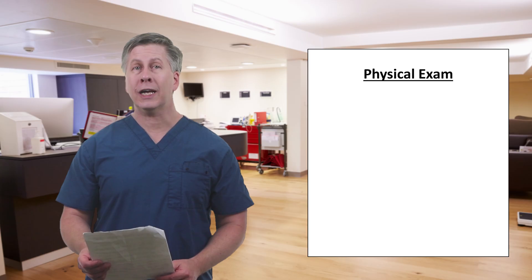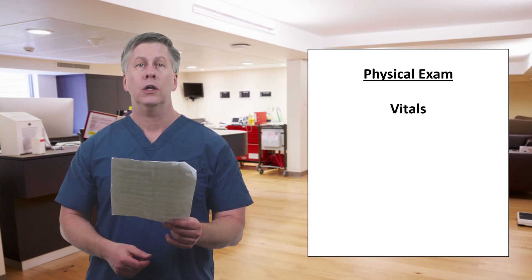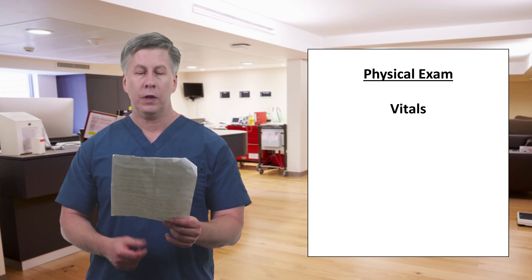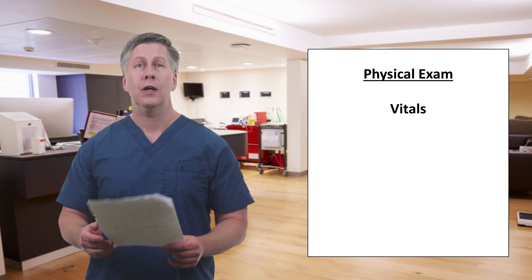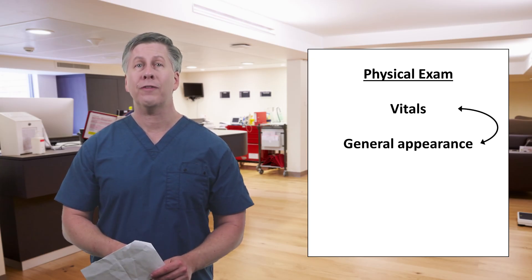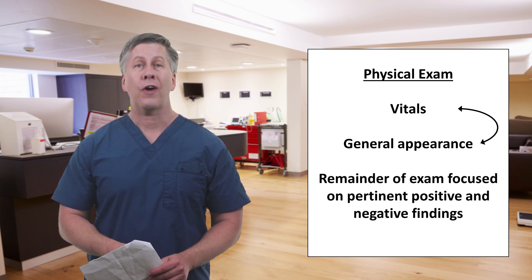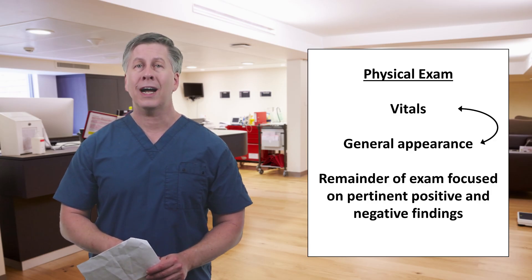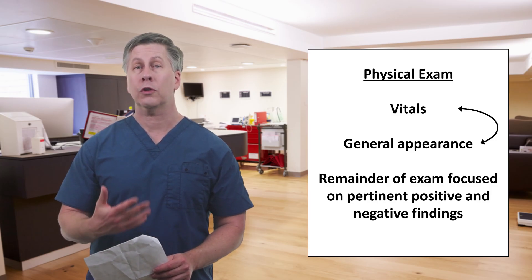Moving to her physical exam, her temperature was 97.4, her pulse was 126, her blood pressure was 136 over 72, respiratory rate 24, and O2 sat 96% on 2 liters. She appeared her stated age and looked comfortable while at 45 degrees in the ER gurney. Her cardiovascular exam was notable for an irregularly irregular heart rhythm with otherwise normal carotid, DP, and PT pulses bilaterally. No murmurs or gallops, and JVP was elevated with the presence of abdominal jugular reflux.